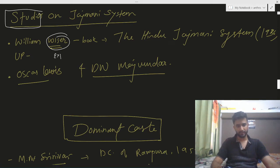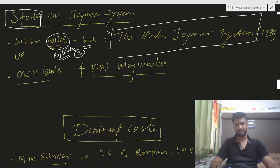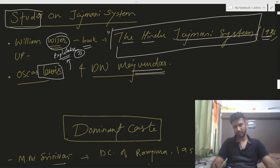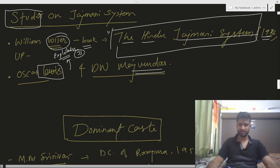Case studies on the jajmani system: William Wiser wrote the book 'The Hindu Jajmani System' in 1936, highlighting its exploitative nature. Oscar Lewis and DN Mazumdar also contributed to the study of the jajmani system and both showed its exploitative character.